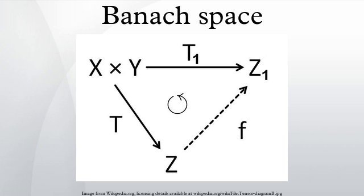For every separable Banach space X, there is a closed subspace M of ℓ1 such that X is isomorphic to ℓ1/M. Any Hilbert space serves as an example of a Banach space. A Hilbert space H on K = ℝ or ℂ is complete for a norm of the form ‖x‖ = √⟨x,x⟩, where ⟨·,·⟩ is the inner product, linear in its first argument. For example, the space ℓ2 is a Hilbert space.